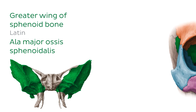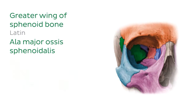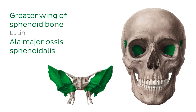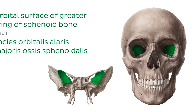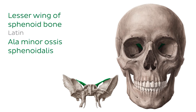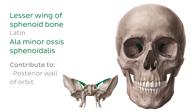We're only going to concern ourselves with the parts of the bone which specifically contribute to the orbital wall. Our first area of interest is the greater wing of the sphenoid bone — more specifically, the orbital surface of the greater wing. We can see the greater wing forming a large portion of the posterior wall of the orbit. Slightly superior to the greater wings, we have the lesser wings of the sphenoid bone, which also contribute to the posterior wall of the orbit, albeit less than their greater counterparts.